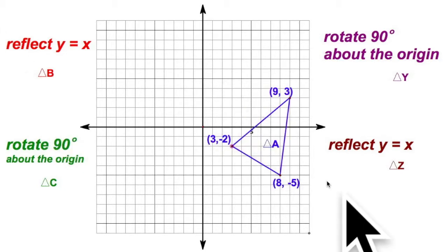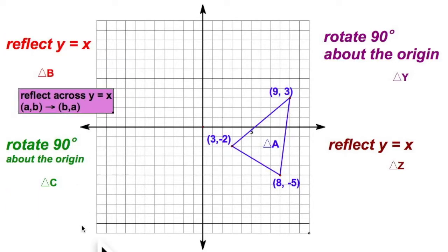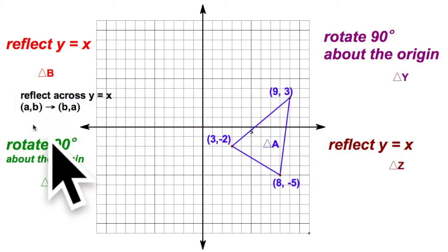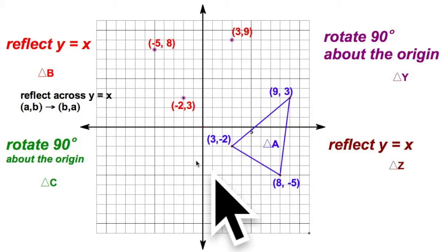Now, we're going to take this blue triangle, my pre-image, and I'm going to reflect it across y equals x. We remember the coordinate rule: AB will map to BA. So, 3, negative 2 becomes negative 2, 3. This 9, 3 will flip over to 3, 9. Getting the hang of this. 8, negative 5 becomes negative 5, 8. So far, nothing you haven't seen before.